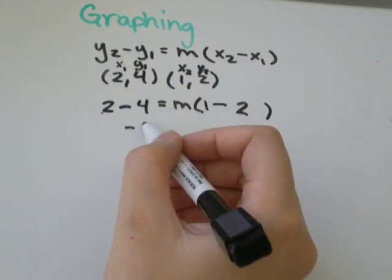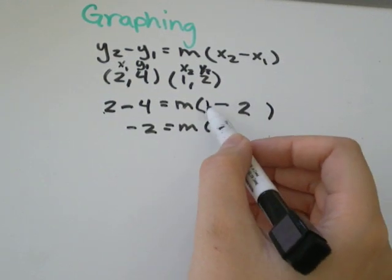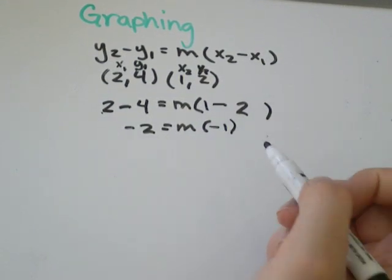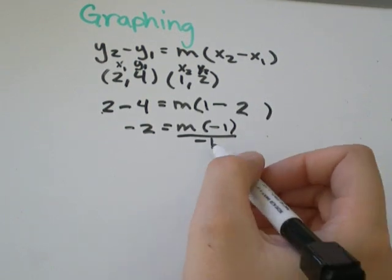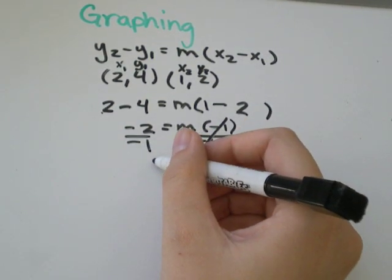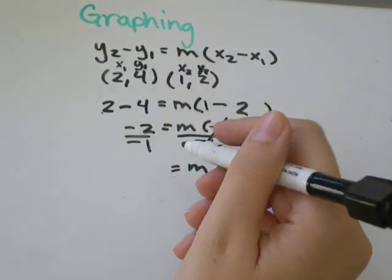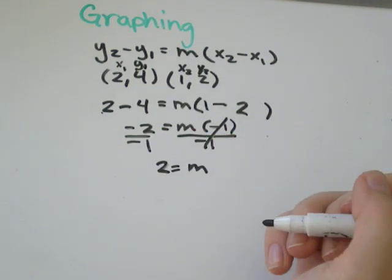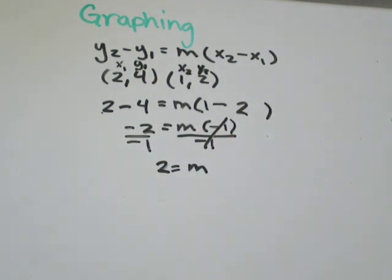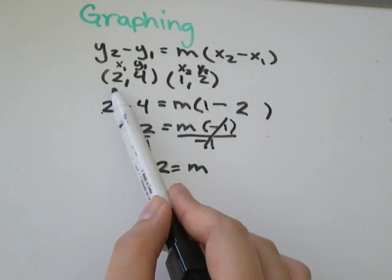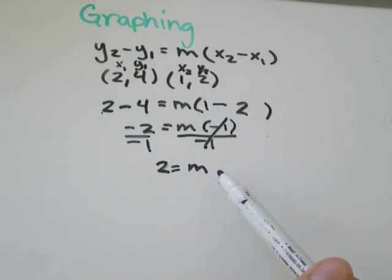2 minus 4 is negative 2 equals m. 1 minus 2 is negative 1. If we divide both sides by negative 1, those will cancel out and we'll get 2 over 1 equals m. 2 over 1 is the same as 2 divided by 1, which is just 2. So what we've managed to find from those two points is the slope of the line that would connect them. So you will be asked, what is the equation of the line defined by having points at maybe (2, 4) and (1, 2).